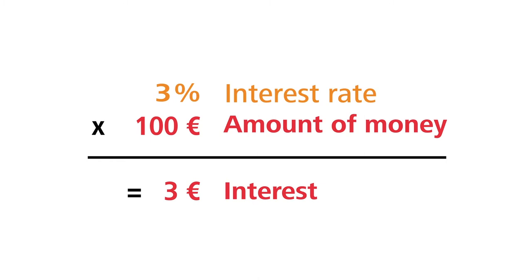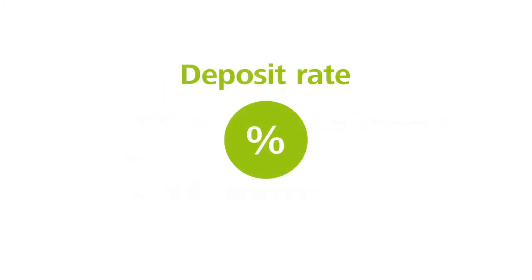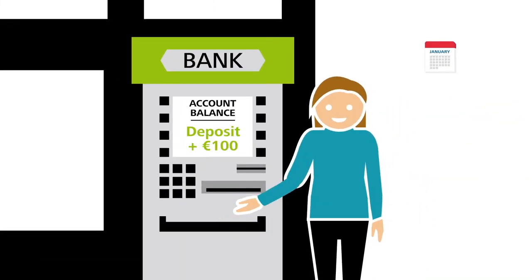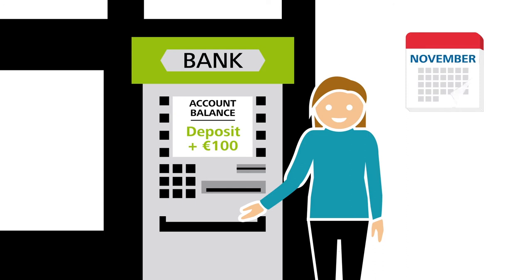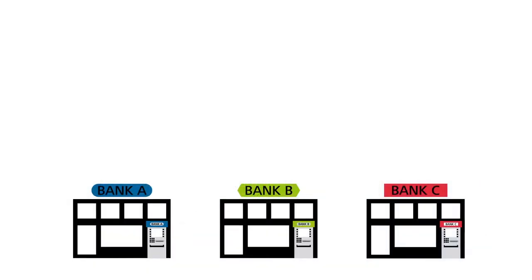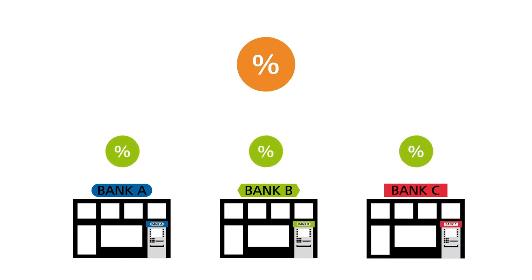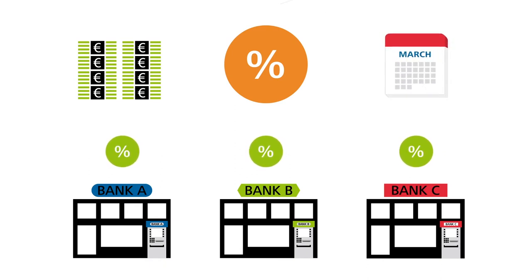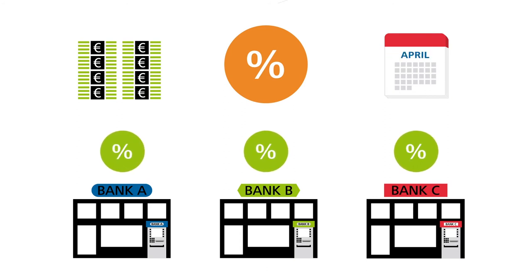Let's now turn to the matter of specific interest rate terms, starting with the deposit rate. People save money in their bank accounts and banks can pay interest to account holders on the deposited money. The rate of interest applied depends on the general interest rate level as well as on the size of the deposit. In addition, it is generally the case that the longer savers forego access to their money, the higher the interest rate will be.